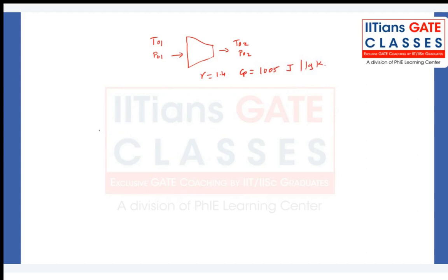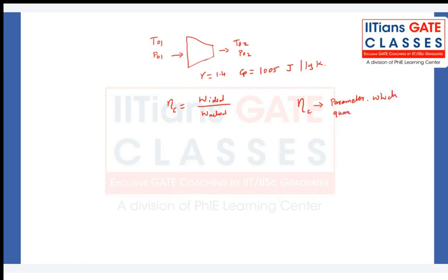Now they are asking the loss due to non-isentropic work. If I look at my efficiency formula, how do we define it? We define it to be work done in an ideal way to work done in actual way. It actually quantifies how much of work you are able to extract out of all the available work you could have extracted. So that is a parameter which quantifies the loss.